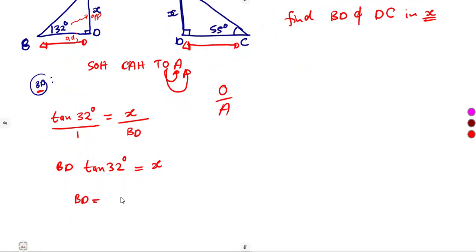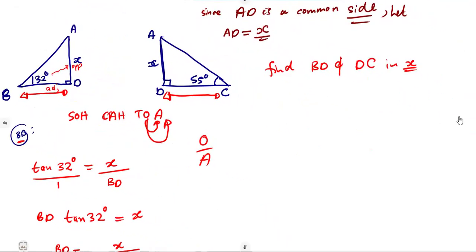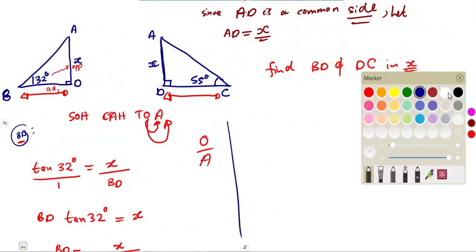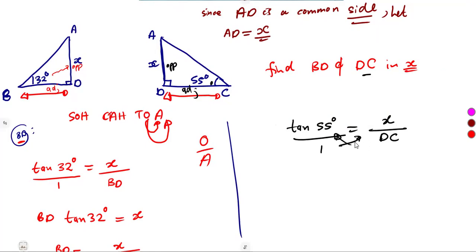Let's find BD: cross-multiplying gives BD × tan 32° = x, therefore BD = x over tan 32°. That's our BD in terms of x. What about DC? DC can also be calculated in terms of x. It's going to be an easier way now. Opposite over adjacent again — so tan 55° = x over DC.